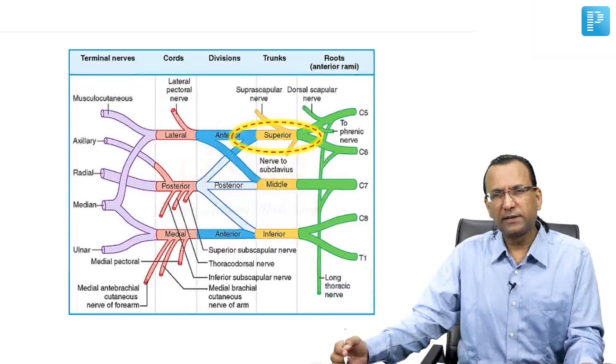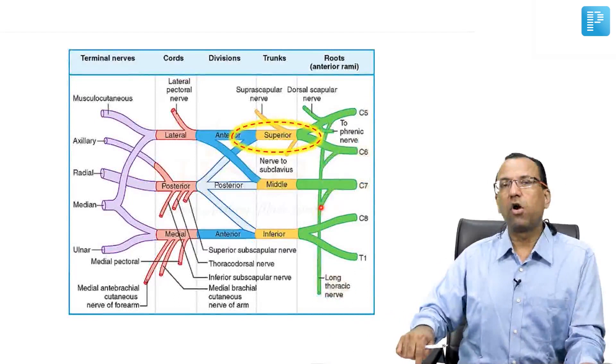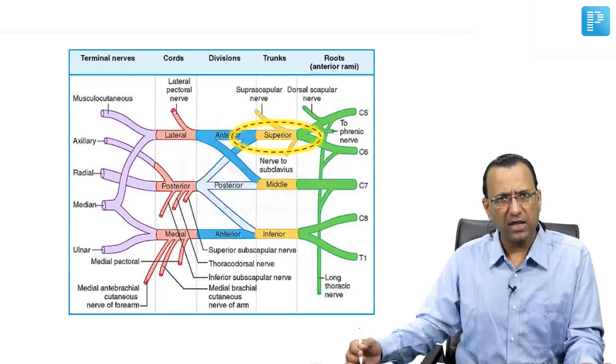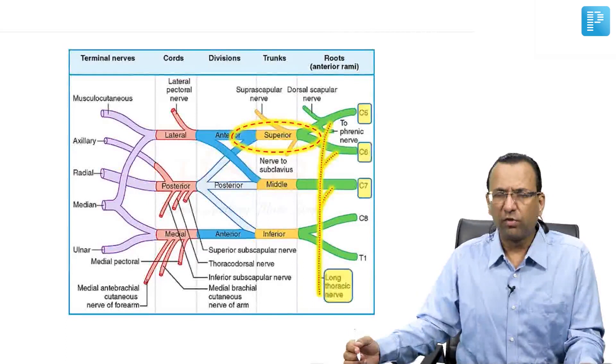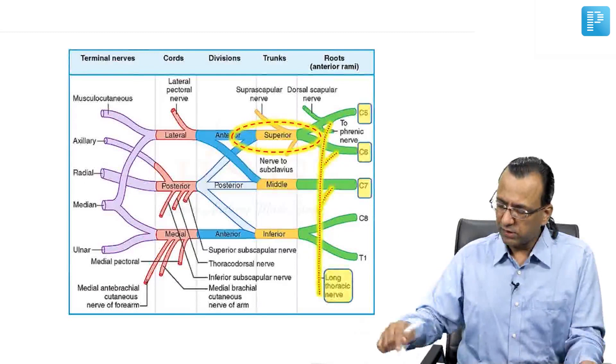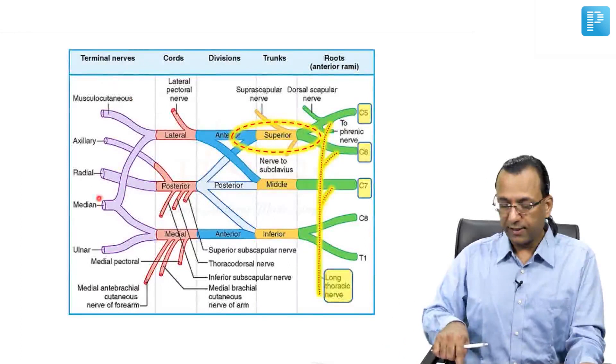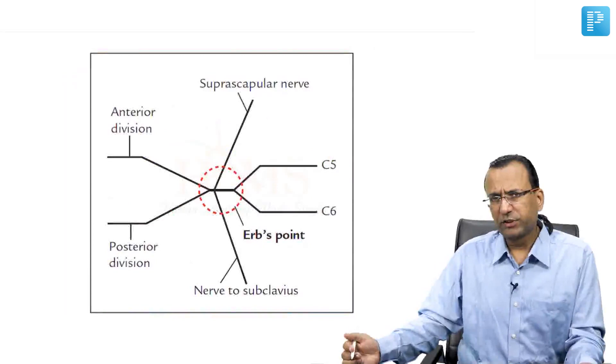This is long thoracic nerve to serratus anterior and it is already given directly by the roots of C5, C6, C7. So long thoracic nerve to serratus anterior directly comes from the roots of C5, C6, C7 and is already given in the neck region. So it will not be involved in most cases of Erb's Palsy. Why? Because it is already given and injury was distal to that level. So only distal area involved not the proximal area, it is still working.